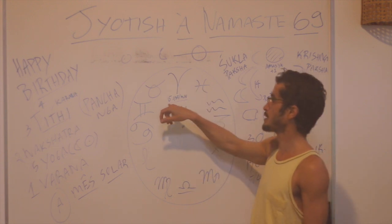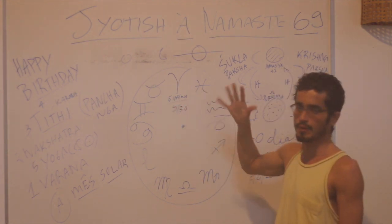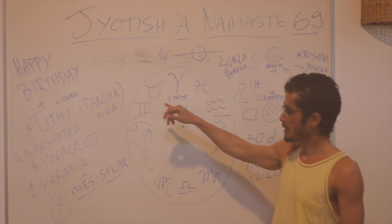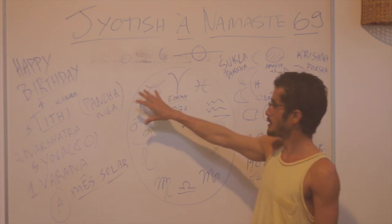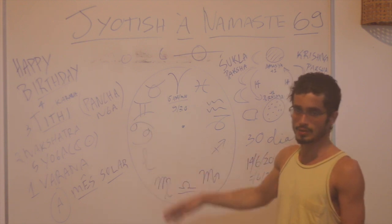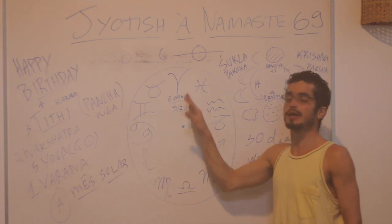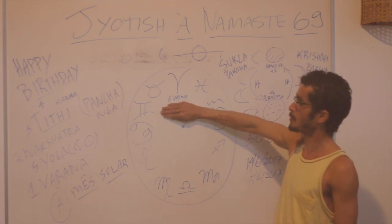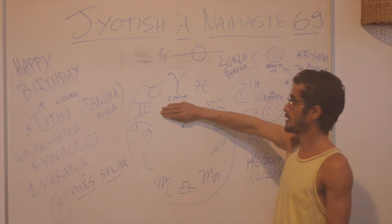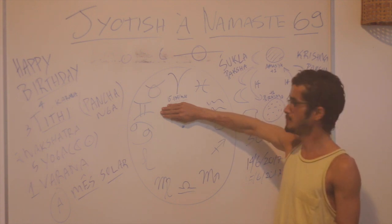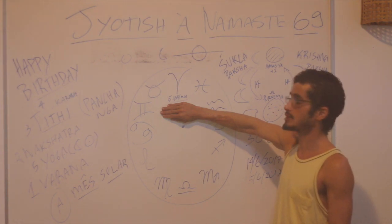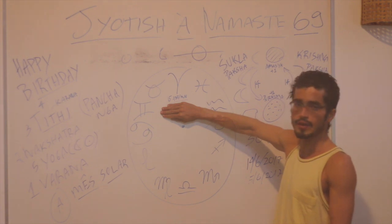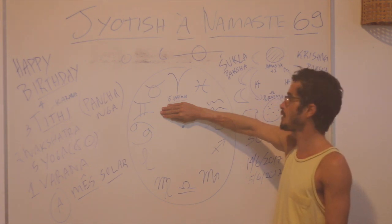If it's from the 15th of April to the 14th of May, probably it's going to be Mesha, Aries. Then counting about 30 days, it's going to be Taurus, Gemini, Cancer, and so on. We are going to suppose now that the person we're talking about was born in Mesha Rashi, the Aries sign — roughly from the middle of April to the middle of May.